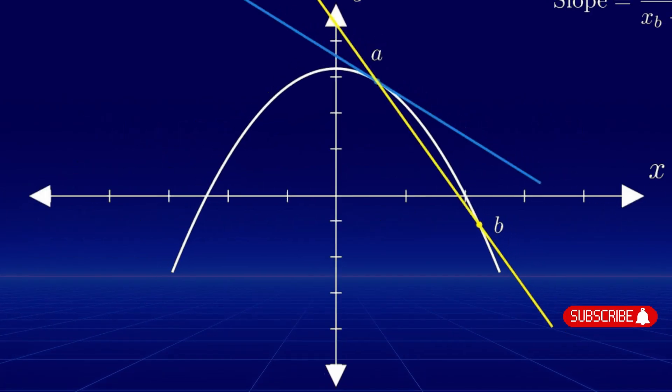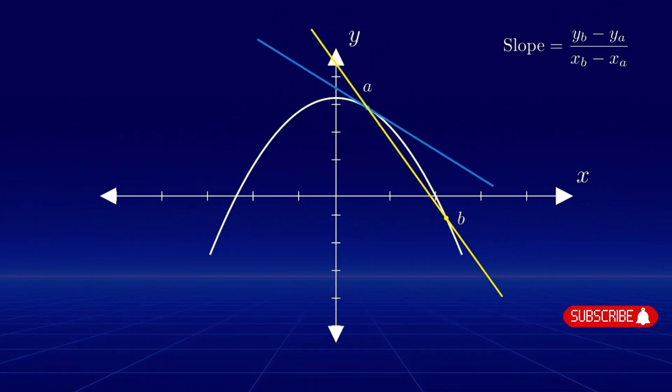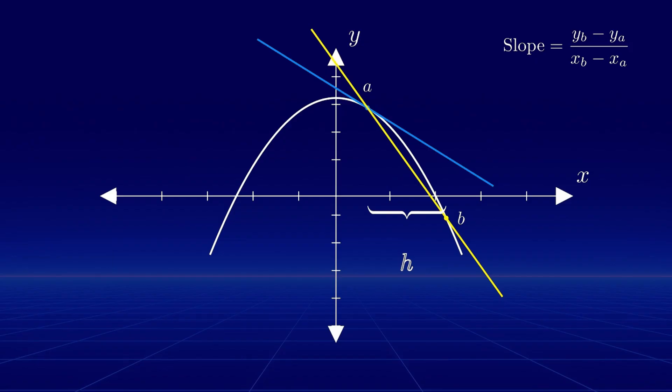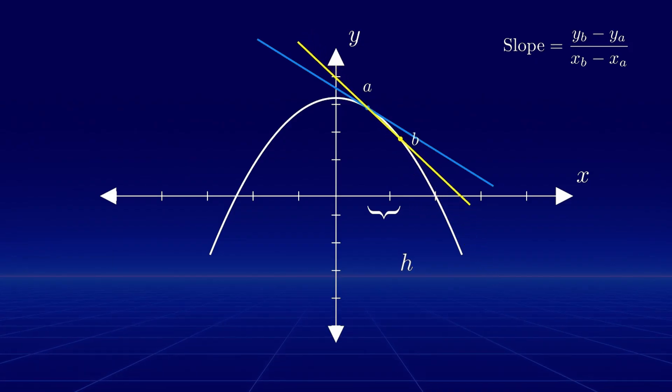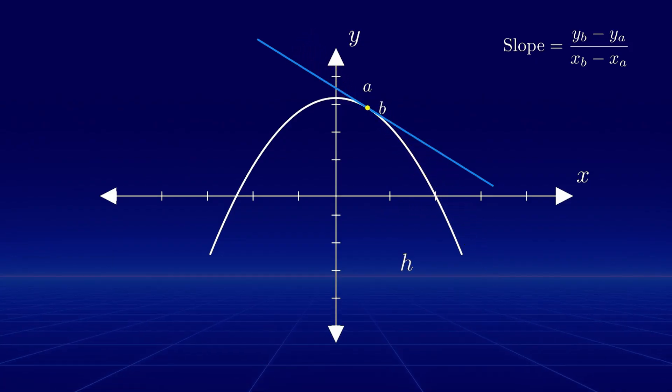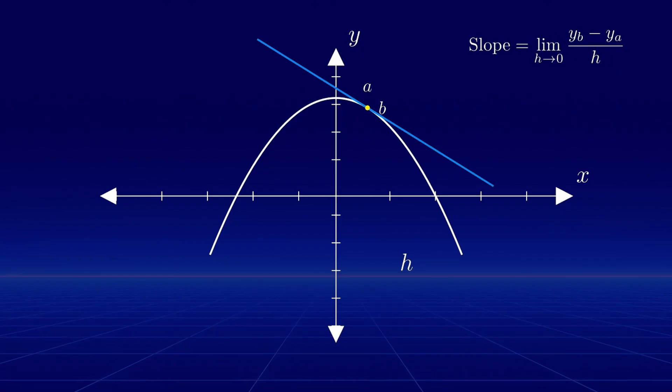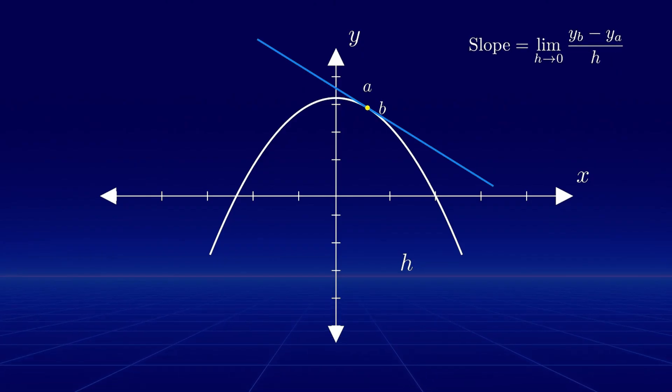In fact, if we call the x distance between the two points h, then if we take the limit as h approaches zero, we obtain the slope at that point. This example represents the derivative of a function at point a.